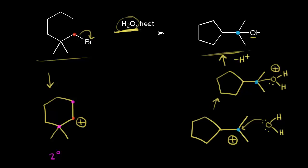Now let's think about how we go from the carbocation on the left to the carbocation on the right. Notice the carbocation on the right is a tertiary carbocation — the carbon in blue is directly bonded to three other carbons, so this one is tertiary. So we must get some sort of rearrangement going from a secondary carbocation to a tertiary carbocation. But this one's different from any rearrangement we've seen so far.